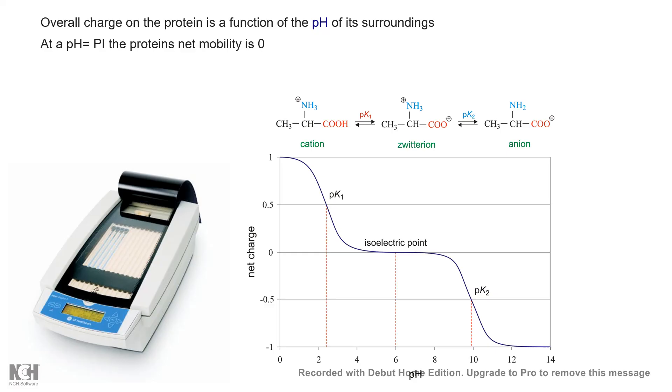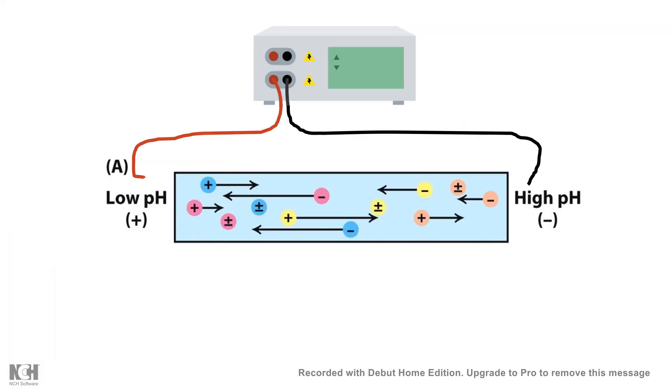The first step is to load the samples on an IPG strip, which is a gel having various pH gradients. It has from anode to cathode a pH gradient.